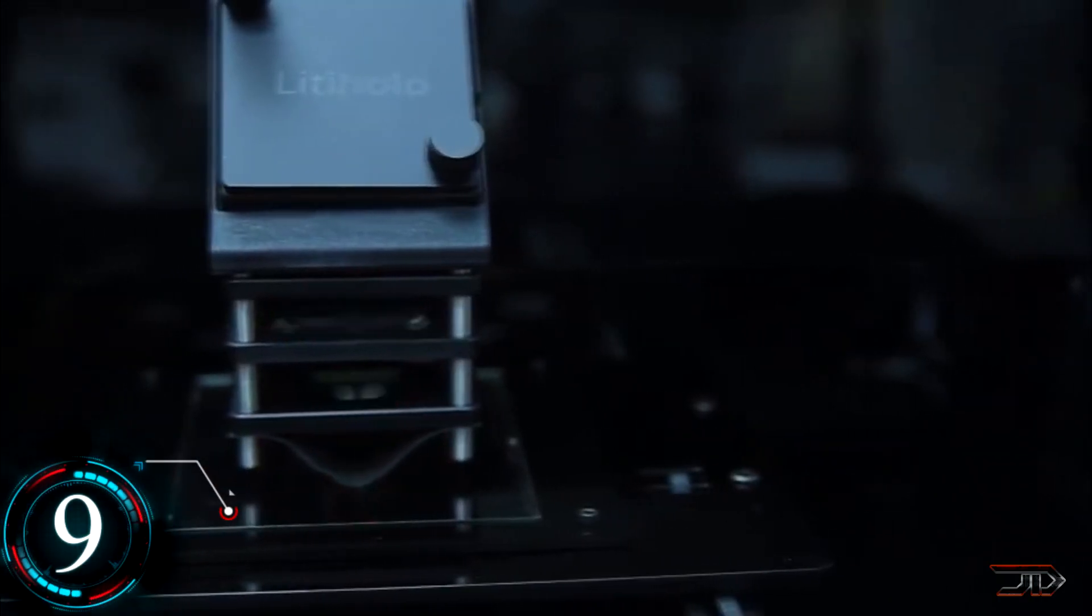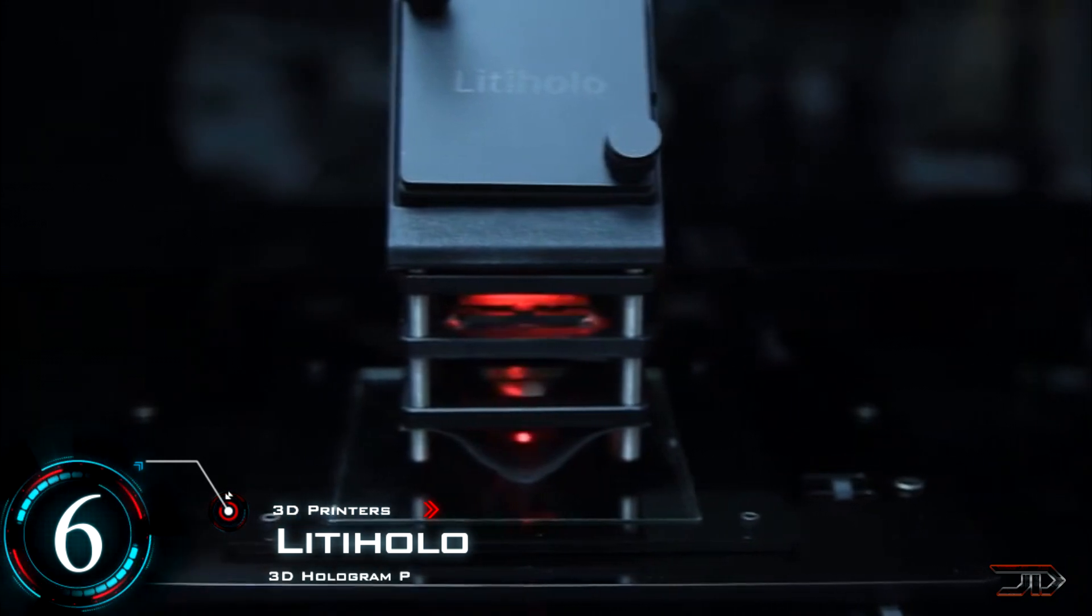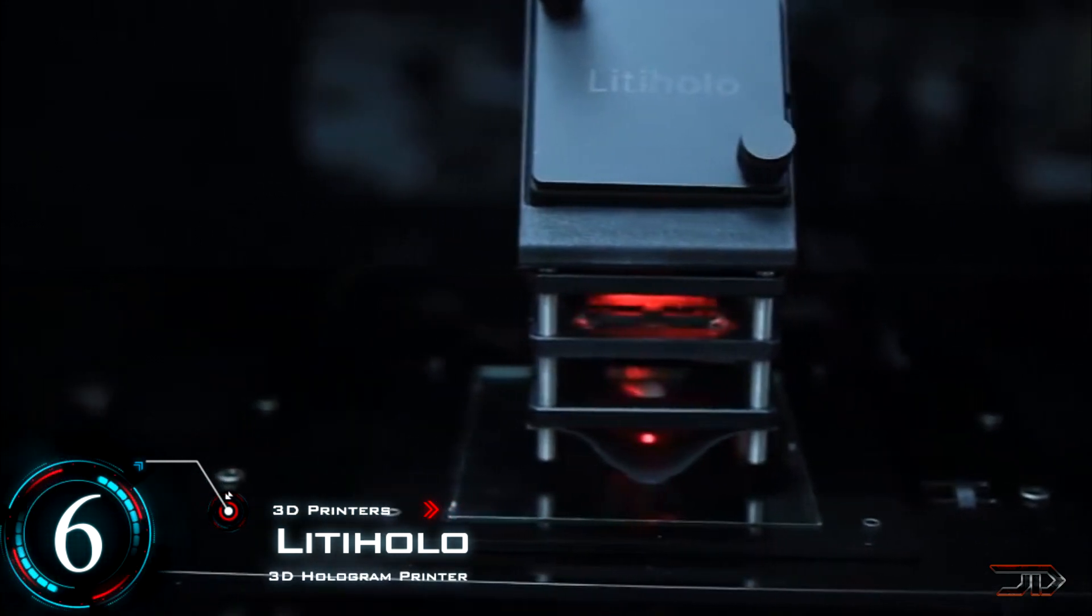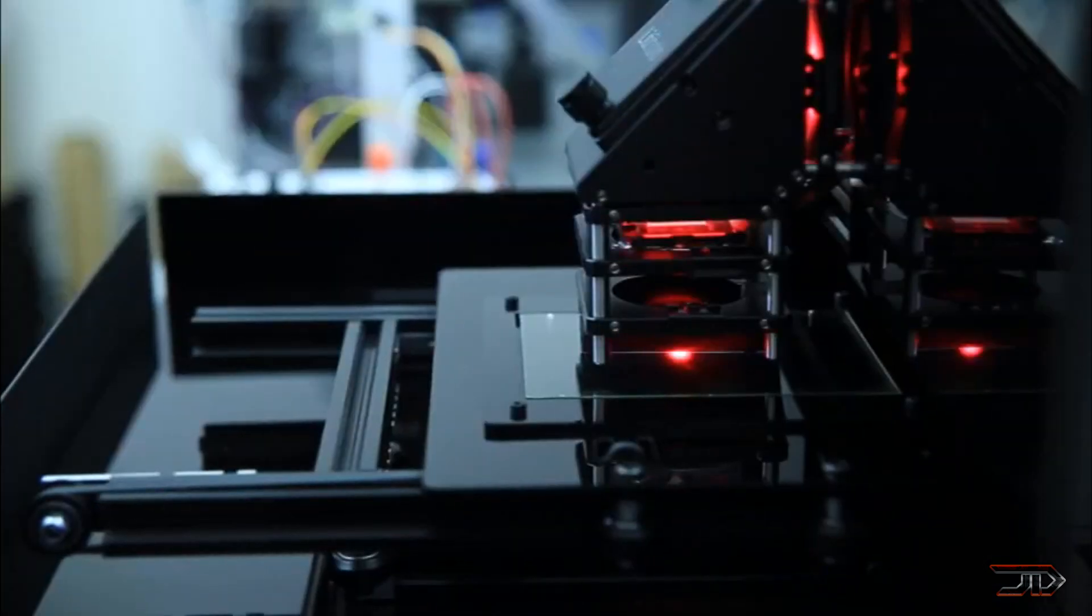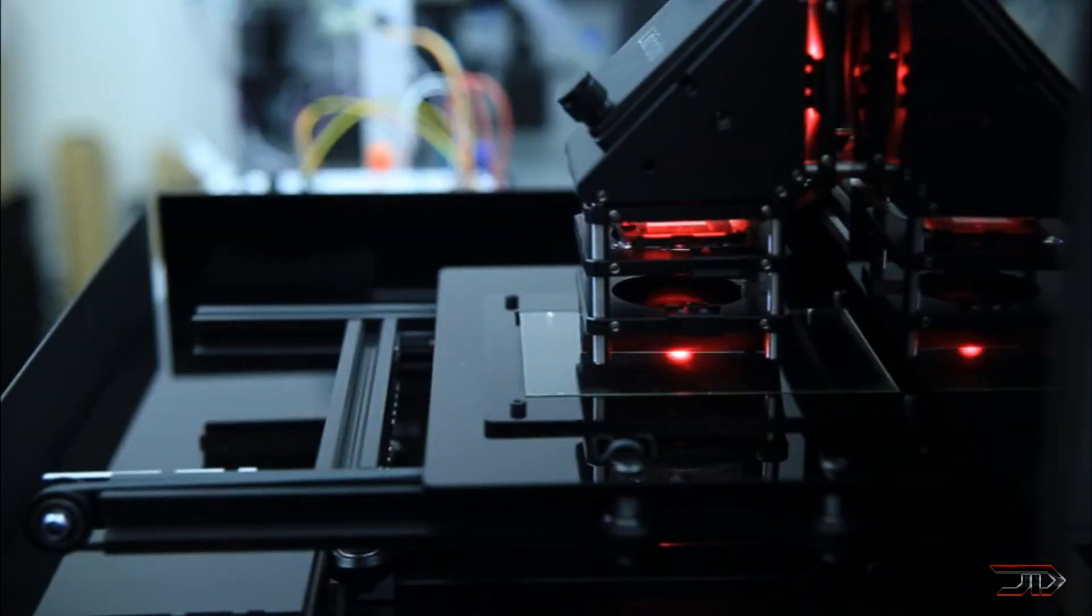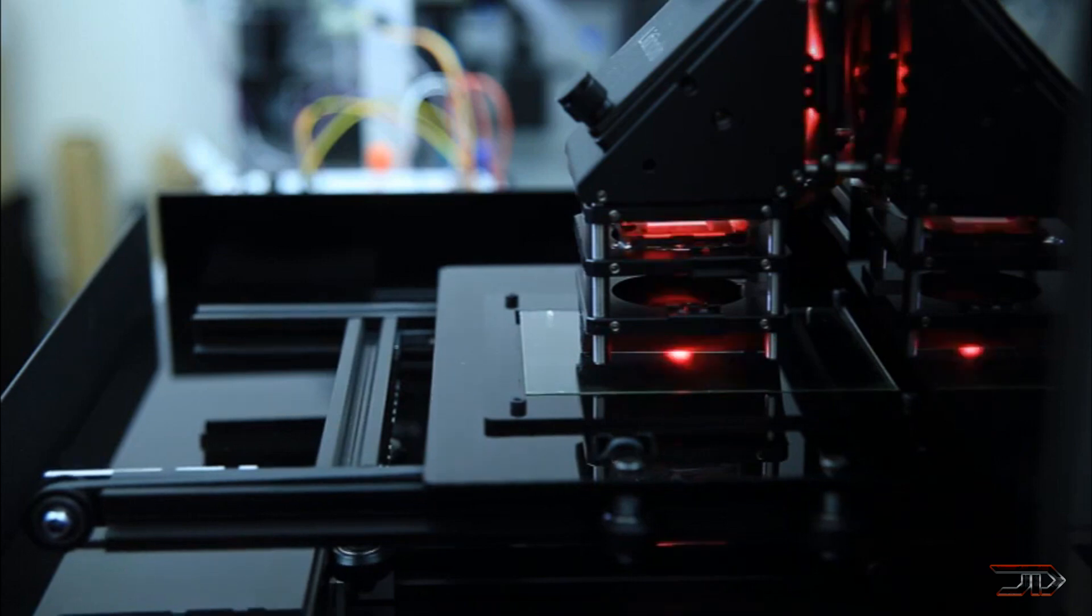At number 6, the Lit Holo. You can now supposedly 3D print holograms up to 4.5 inches. And it's not quite true volumetric display technology, but you can take 3D models from several different software programs, such as Sketchfab or Qlone, and convert them into holograms.